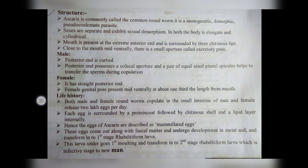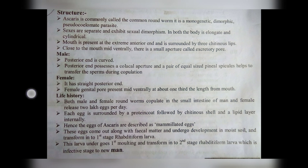Let us discuss the structure of Ascaris lumbricoides. Ascaris is commonly known as the common roundworm. It is a monogenetic, dimorphic, pseudocoelomate parasite. Sexes are separate and exhibit sexual dimorphism. In both sexes, the body is elongate and cylindrical. The mouth is present at the extreme anterior end and is surrounded by three chitinous lips. Close to the mouth, mid-ventrally, there is a small aperture called the excretory pore. The structures are of two types: male and female.